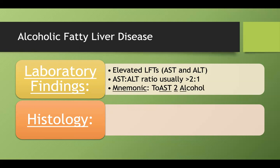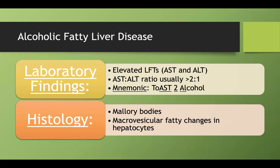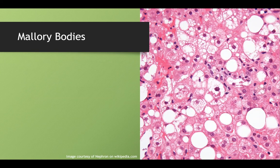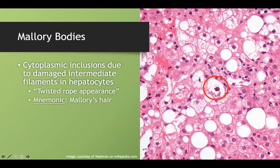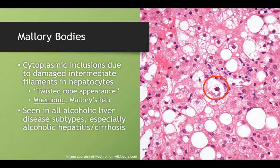Our mnemonic is 'toast to alcohol' — AST before the 2, then alcohol — so AST to 2 to 1 ratio. On histology, you may see Mallory bodies — cytoplasmic inclusions due to intermediate filament damage that show a twisted rope appearance — and macrovesicular fatty changes. Mallory bodies are not exclusive to alcoholic hepatitis; all alcohol liver diseases can result in them.